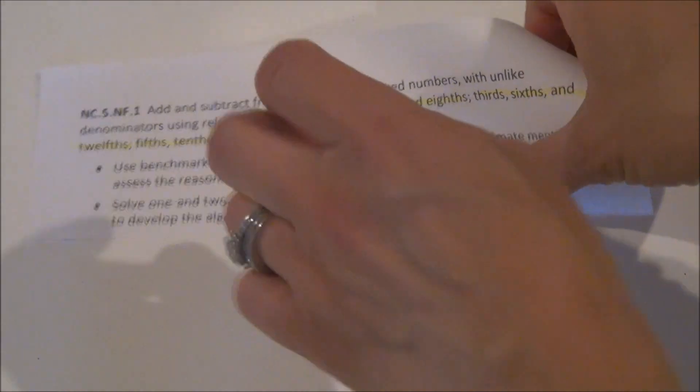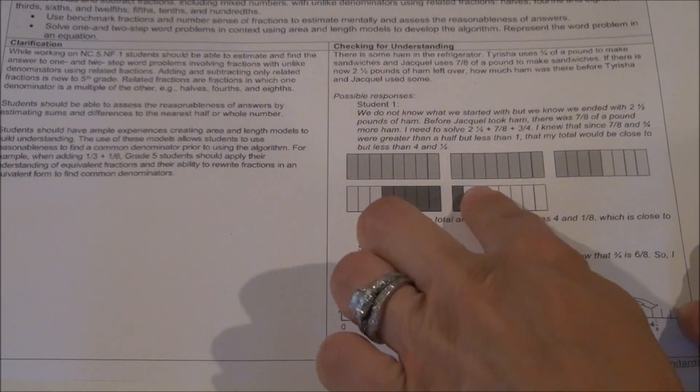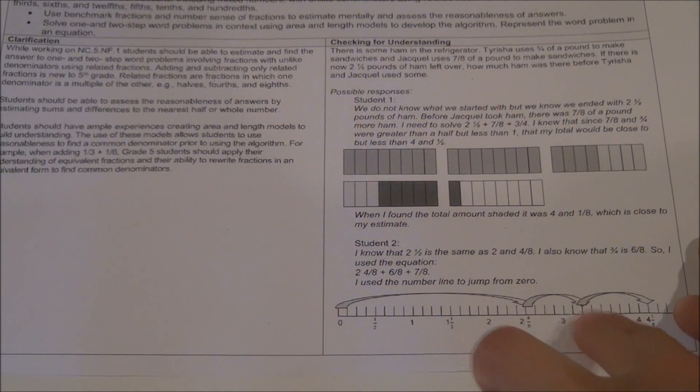This video examines why we can find common denominators when adding two fractions and how to use models to find common denominators, such as bar models, circle models and number lines.